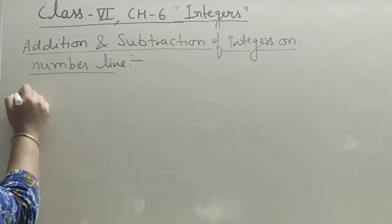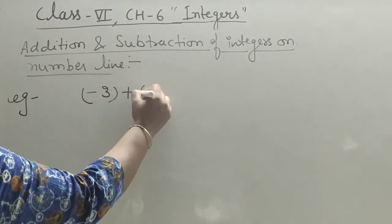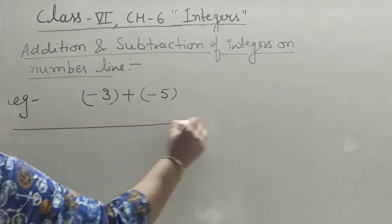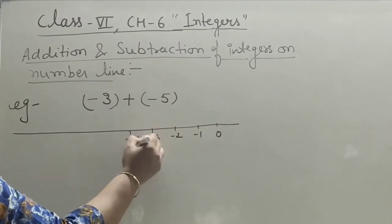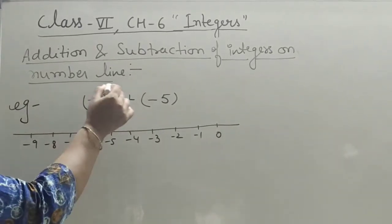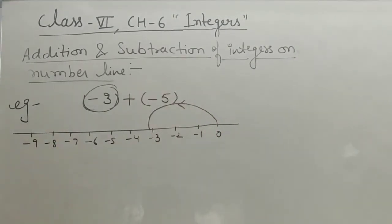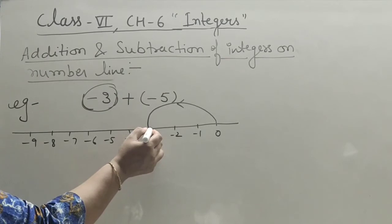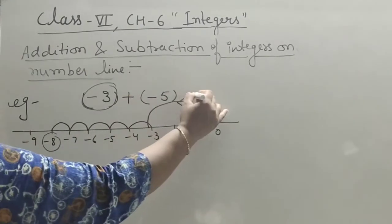Next example: if both are negative integers, like minus 3 plus minus 5. Both are negative, so we draw the number line showing negative numbers. Start from zero and jump to minus 3, then since the second integer is also negative, we move further left — one, two, three, four, five more steps. The answer is minus 8.